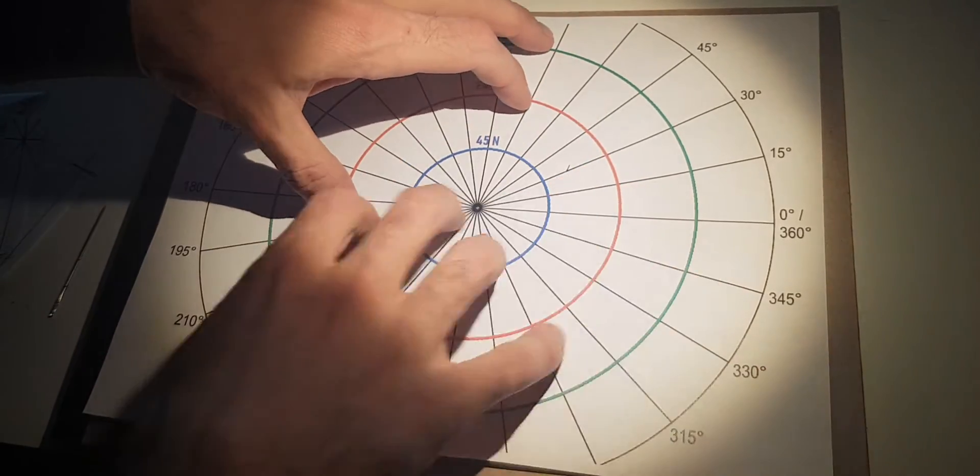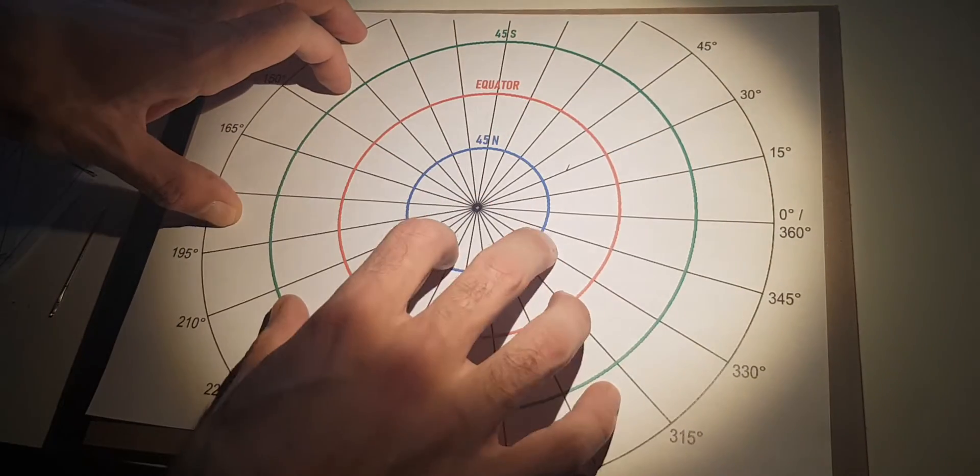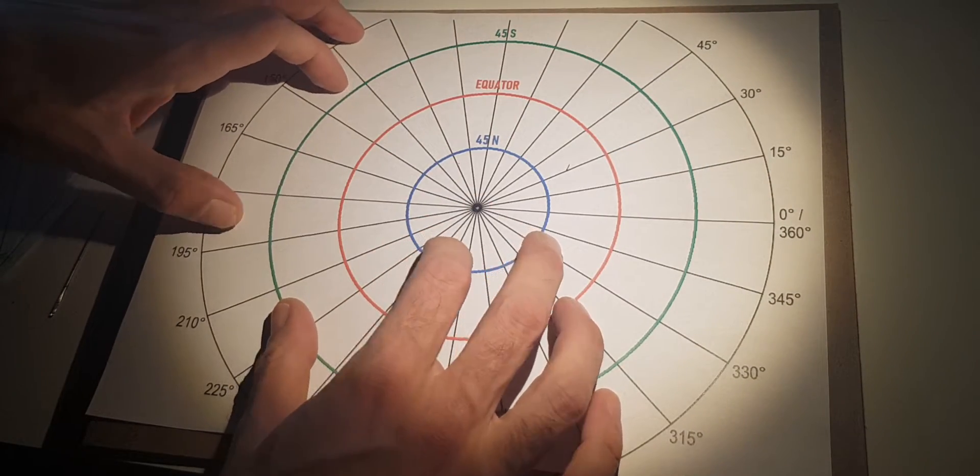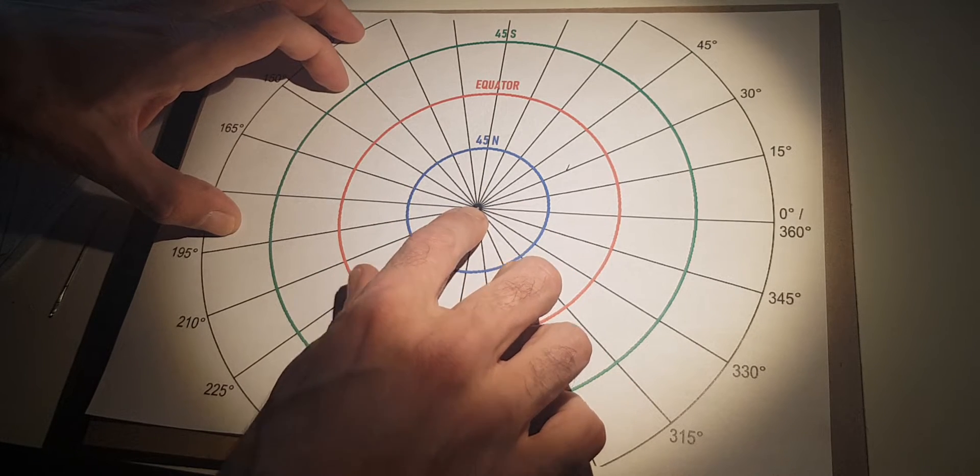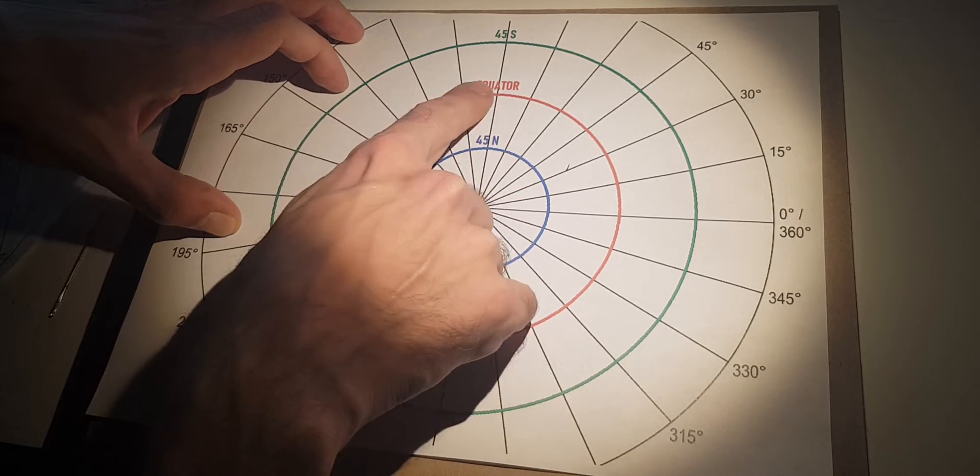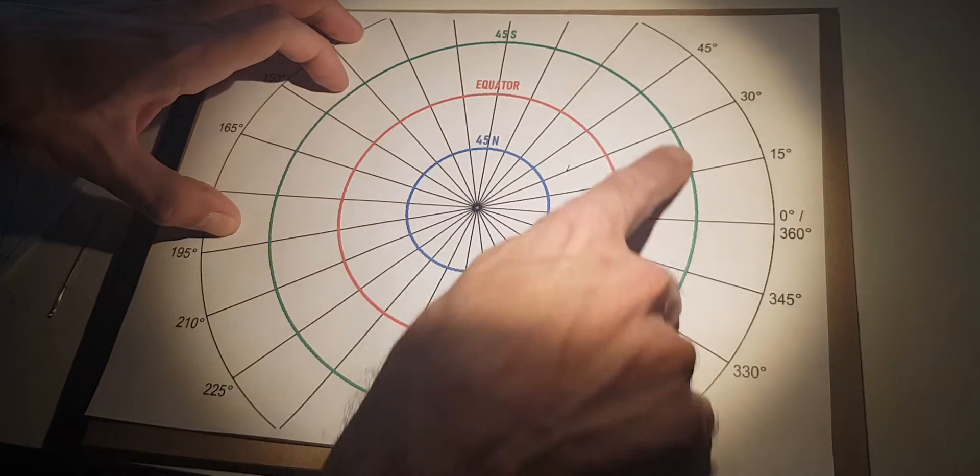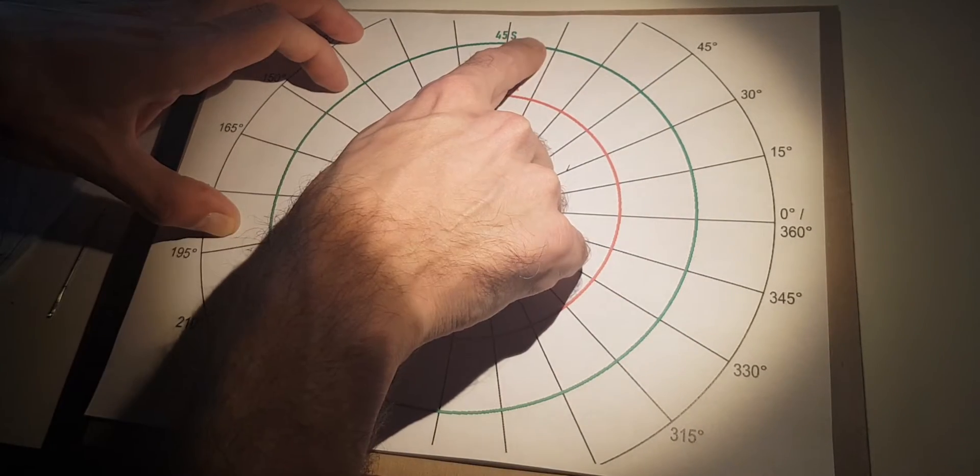But here we have our Flat Earth. We have the North Pole in the center, our 45-degree north mark at the blue circle, the equator at the red, and our 45-degree south here with the green.